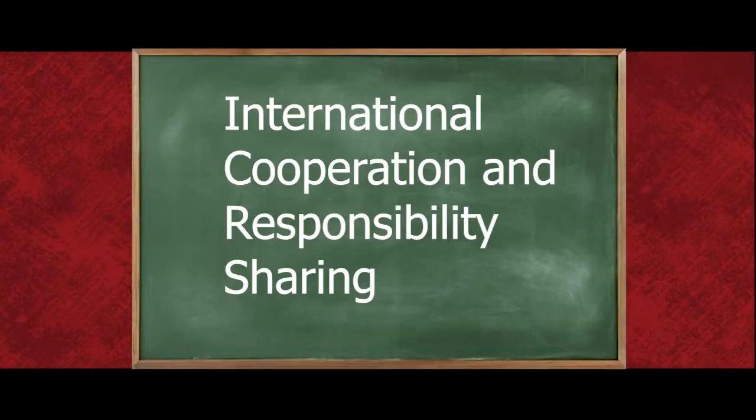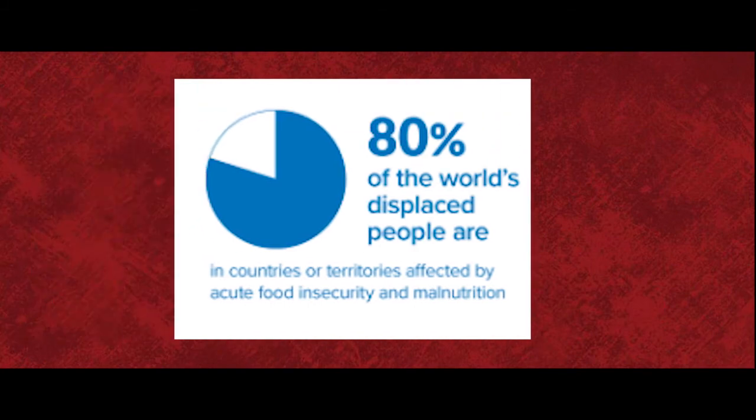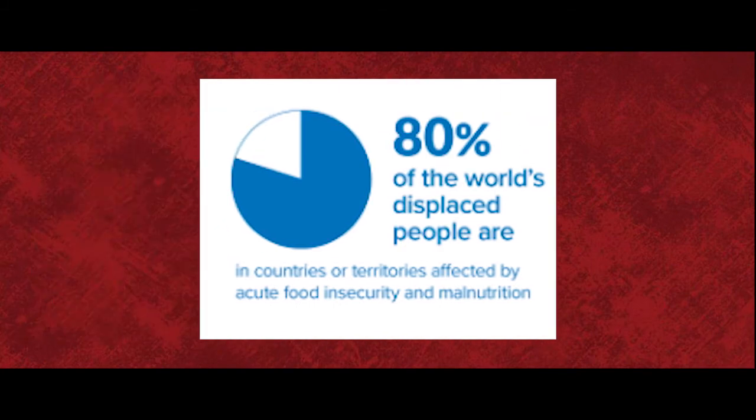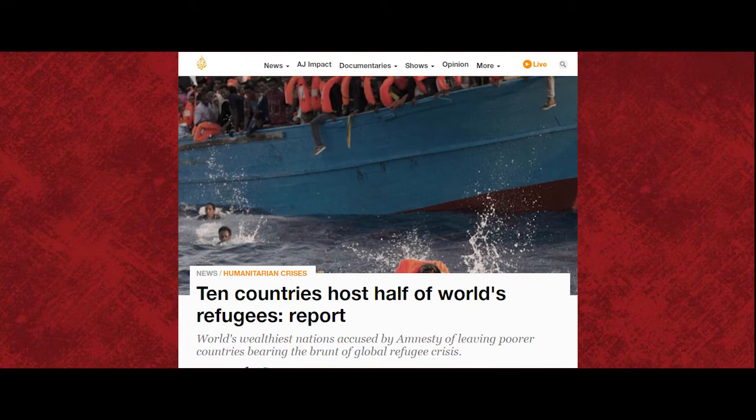The countries that are home to the highest number of refugees have arguably become so as a result of what some observers term accidents of geography. However, as we have seen, it might be more accurate to say that these accidents of geography have been vigorously reinforced by containment strategies used by countries in the Global North. Whether as a result of geography or policy, most refugees live in countries that neighbour the country where they fled. Eighty percent live in developing regions, and only a small proportion of refugees live in the Global North. The five countries that hosted the highest number of refugees in 2018 are Turkey, Jordan, Lebanon, Pakistan, and Uganda.